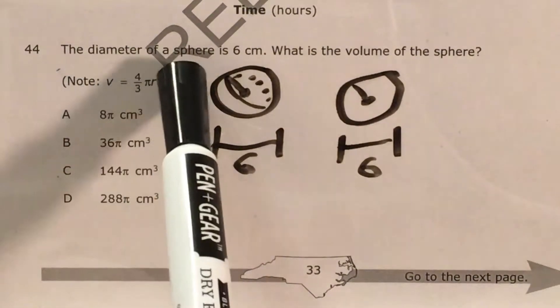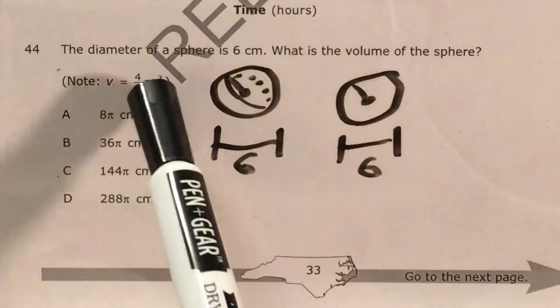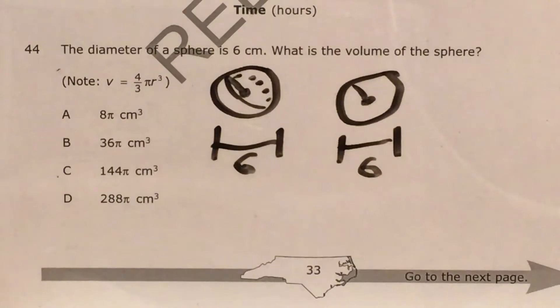The question tells us that the diameter of a sphere, not a circle now, a sphere, is six centimeters and we're supposed to find its volume. They were nice and actually gave us the formula for volume, but they did put the answer choices in terms of pi, so that's going to make this question a little different, but we're going to make it through.